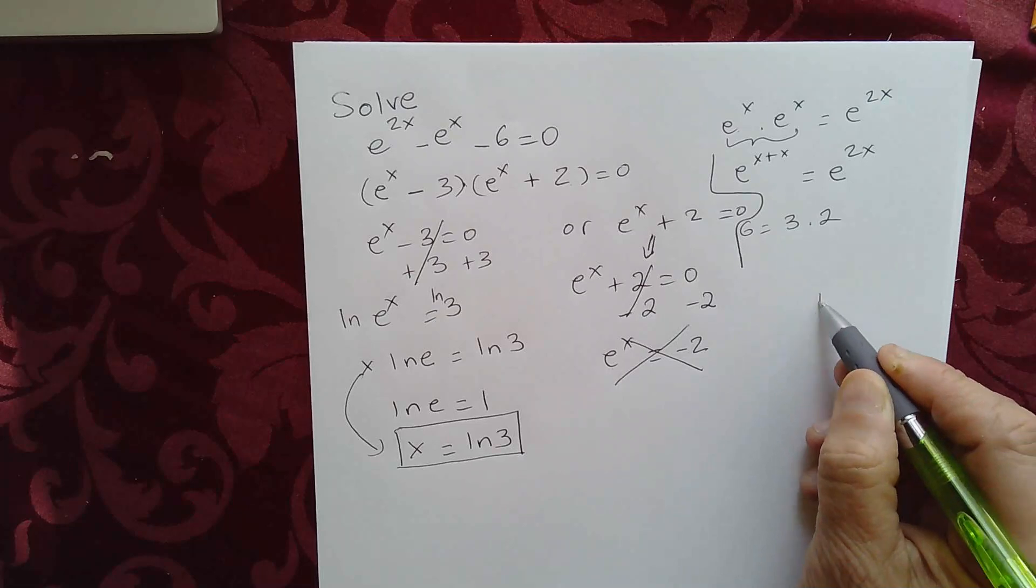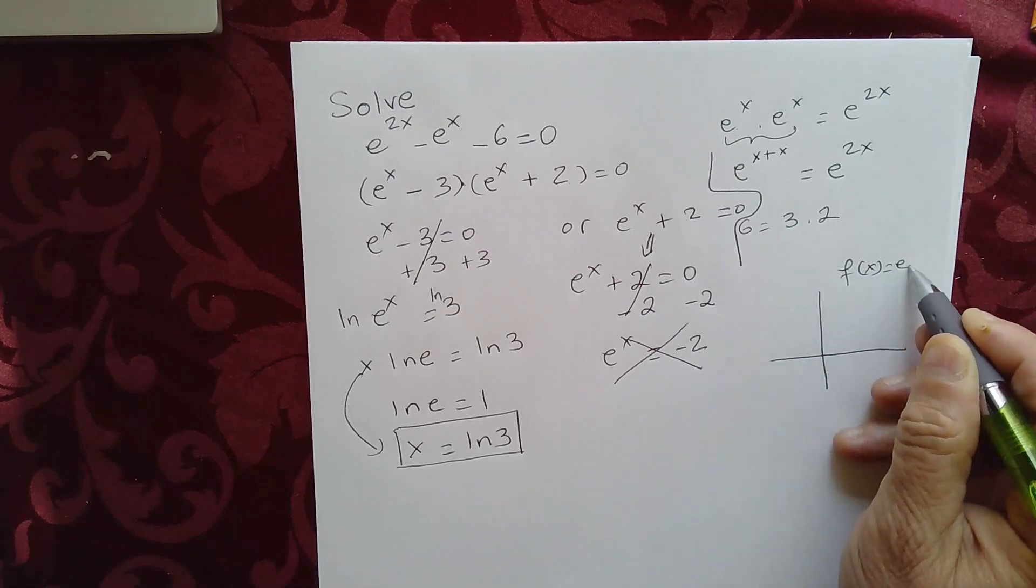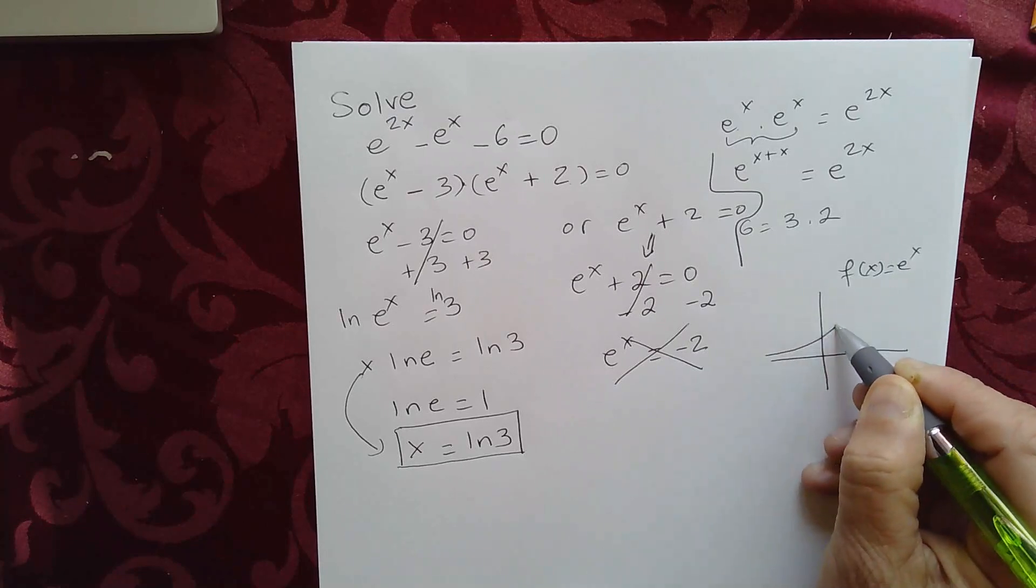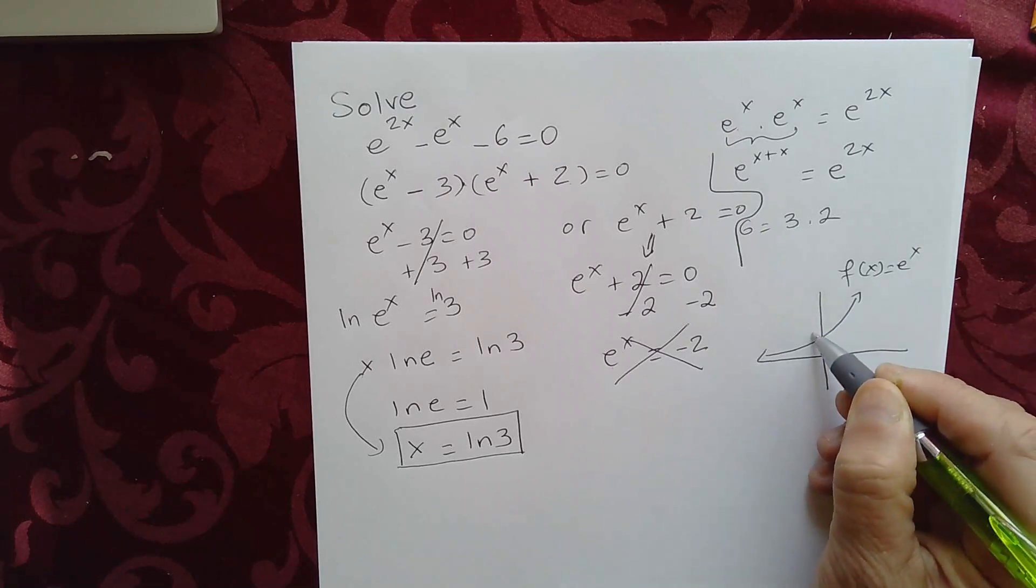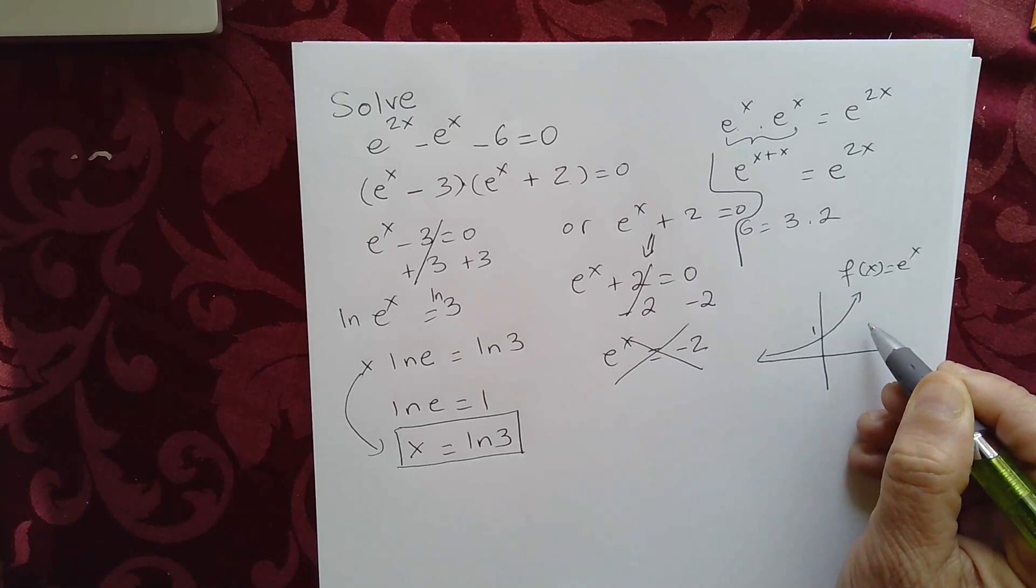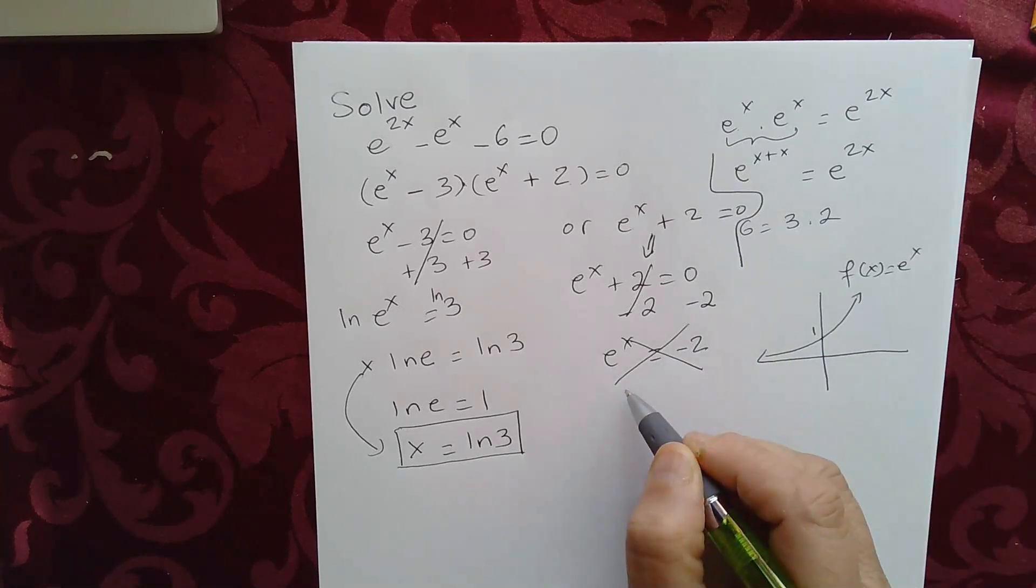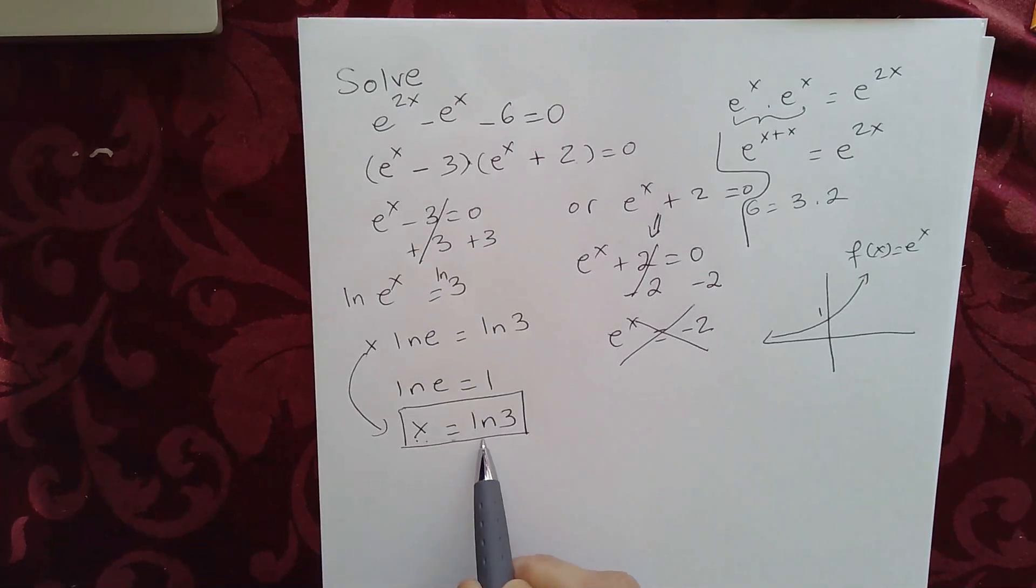If you recall, the graph of f of x equal to e to the x is this. When x is 0, e to the 0 is 1. So this is 1. e to the x is never negative, so you have to reject the solution. The only solution we have is x equal to ln 3.